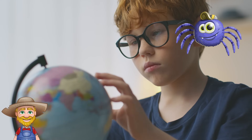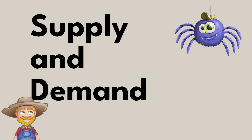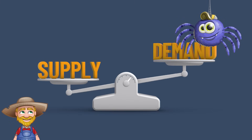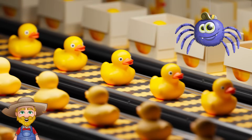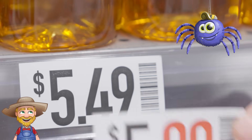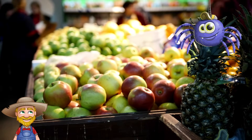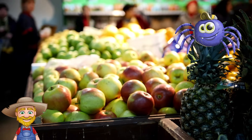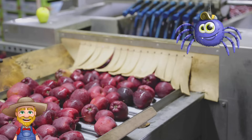Indeed, Aldo. One of the most important concepts in economics is supply and demand. Supply is how much of something is available. Demand is how much of something people want. The price of something is determined by the interaction of supply and demand. For example, look at these apples — I have red apples, green apples, and yellow apples.